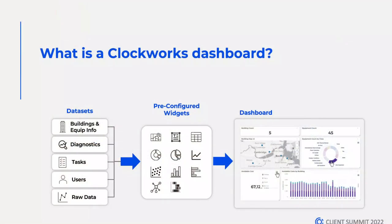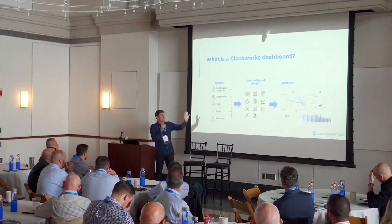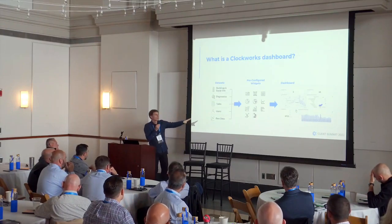Step two is to think about pre-configured widgets. We're trying to avoid that extra step of you formatting an x-axis on a column chart. When you drag on a donut chart, a pie chart, or a column chart, it's your preference — what visual do you like, how is this going to represent my data best. What you end up with is a dashboard, and the power with what we've created is really the consistency of this left side.